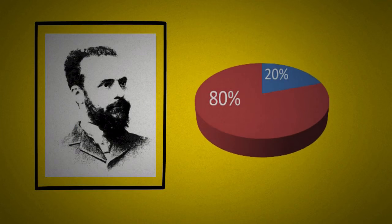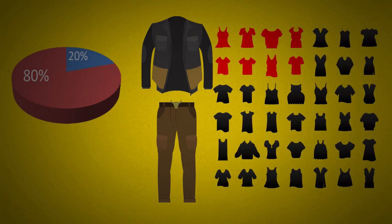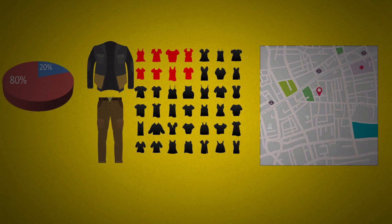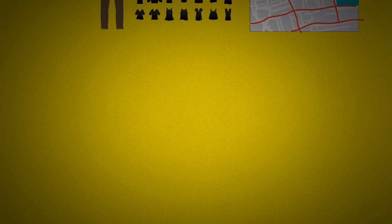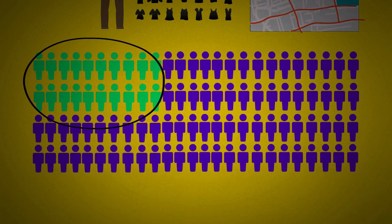Most people have already heard of Pareto's 80-20 rule: that 80% of the time you wear only 20% of the clothes you own, that 80% of the traffic is carried by only 20% of the roads, that 80% of your income comes from only 20% of your customers.